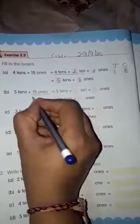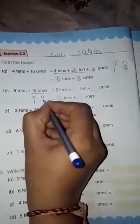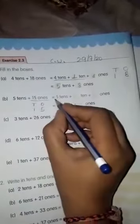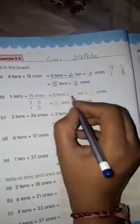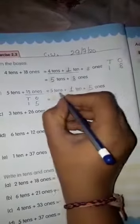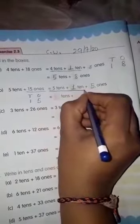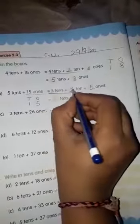Next, 5 tens plus 15 ones. 15 ones means 1 ten, 5 ones. It is equal to 5 tens as it is. Now we have to write tens and ones. So we will write 1 in tens box, tens place, and 5 in ones place. Next step, we will add 2 numbers. 5 tens and 1 ten is equal to 6 tens and 5 ones as it is.